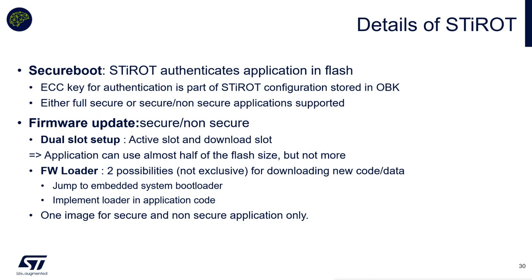You also need to provision zero-initialized data used by STI-ROT to store the current version installed on the product. An ECC key is used for authentication of the application. Your application can be fully secure or secure plus non-secure — but there is only one image for both, meaning one signature for the concatenated secure and non-secure application. For firmware update, it's a dual-slot setup with an active slot and a download slot, so the application can use almost half the flash — no more, since the download and execution slots must be the same size. To get a new firmware version, you can implement a firmware loader in your application or jump to the embedded system bootloader to download a new version — which will be demonstrated in the next hands-on.